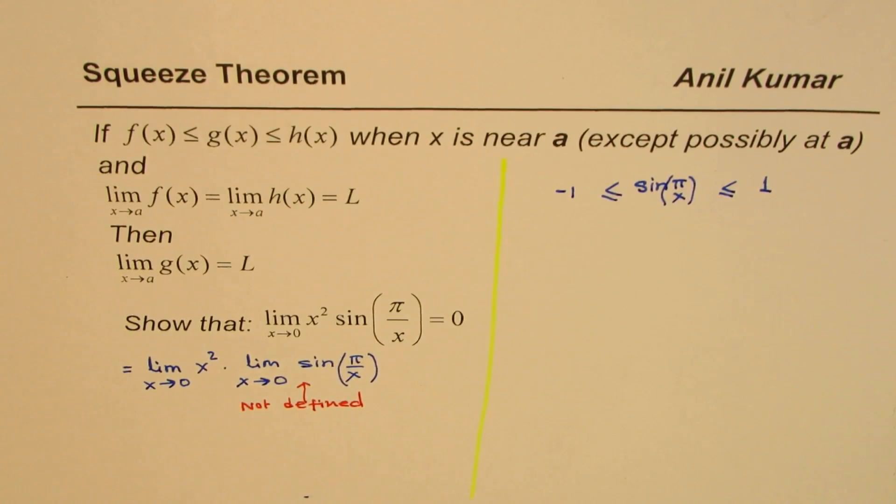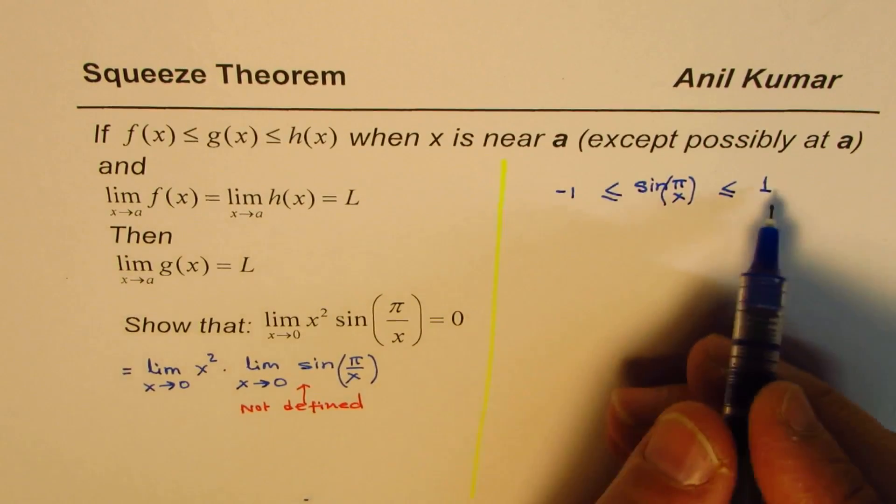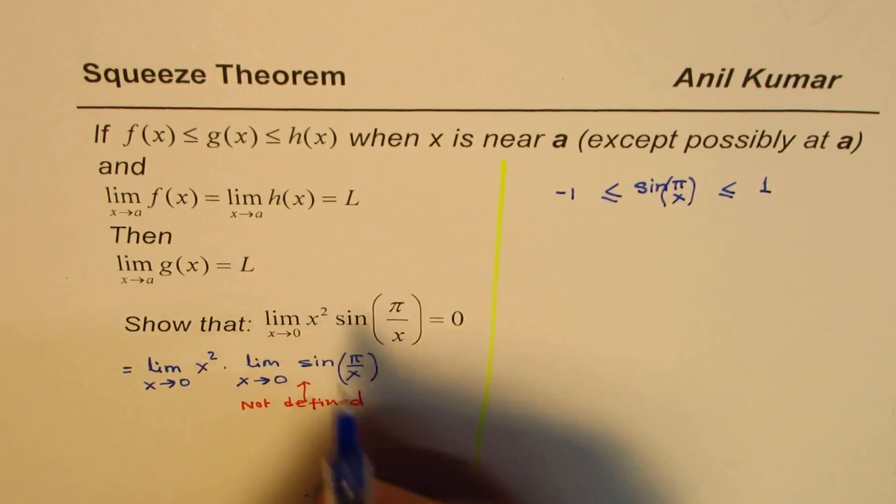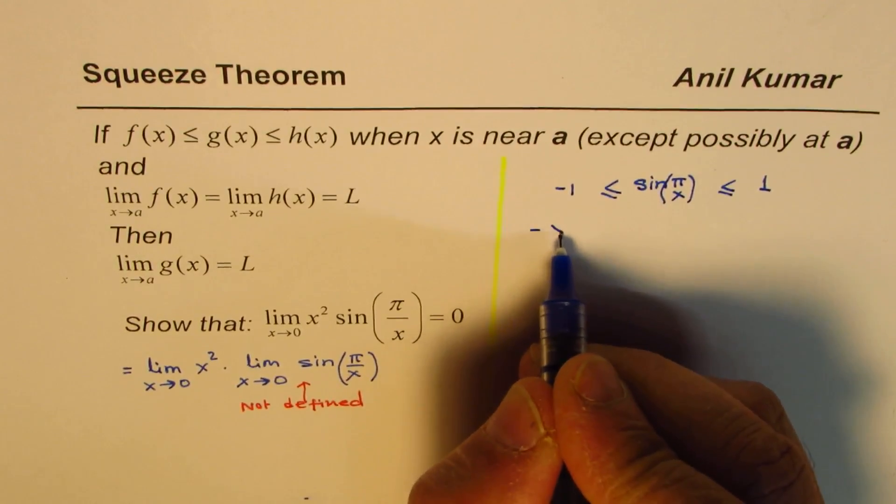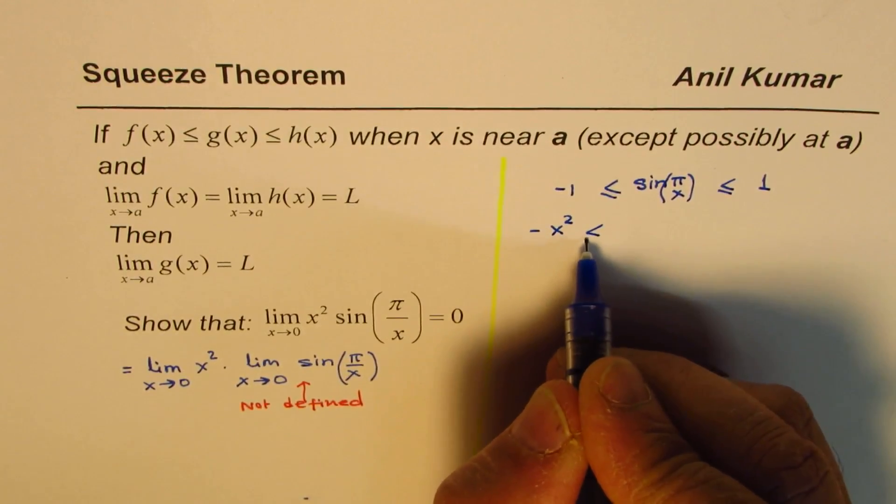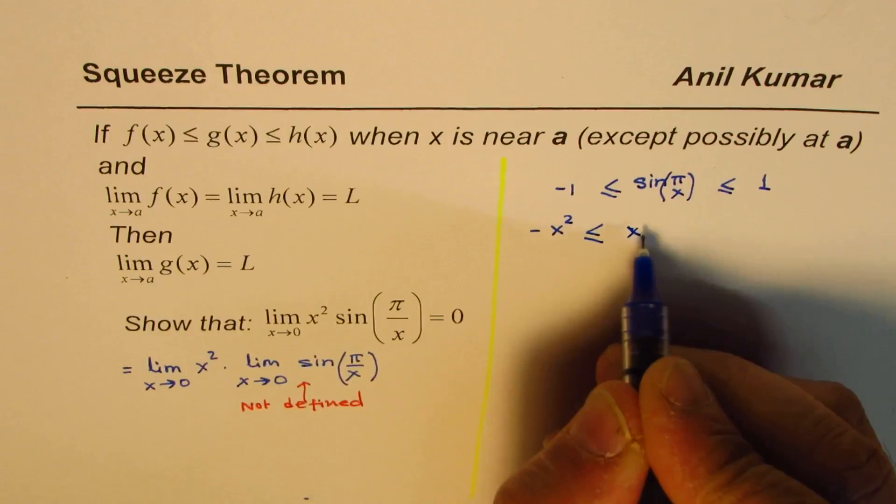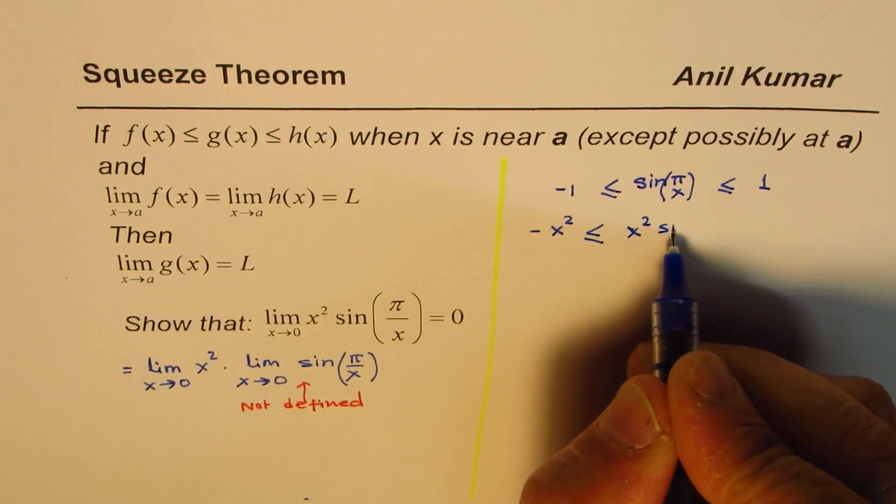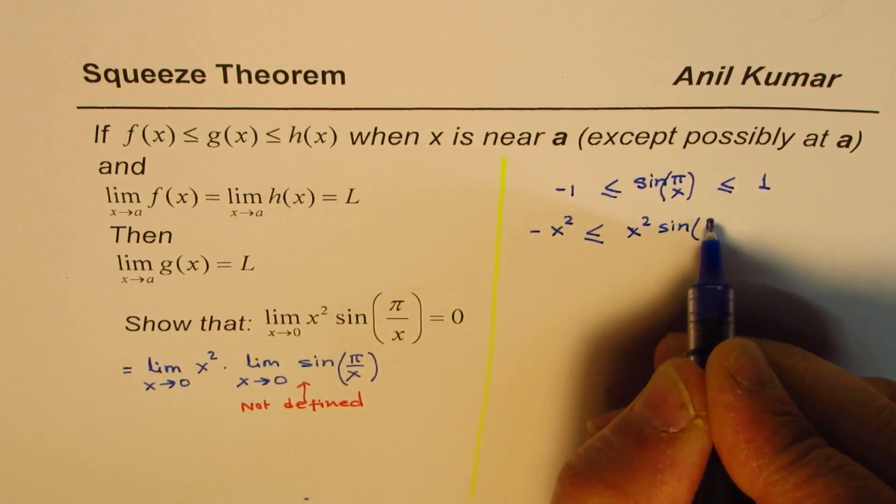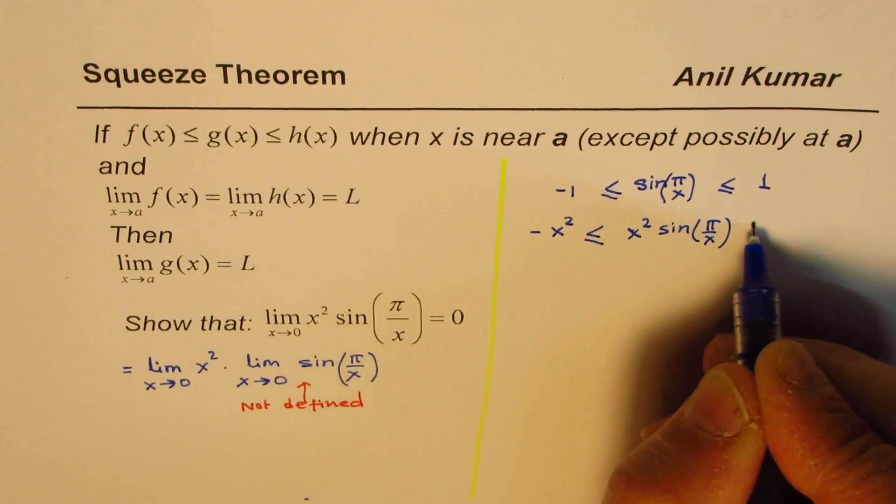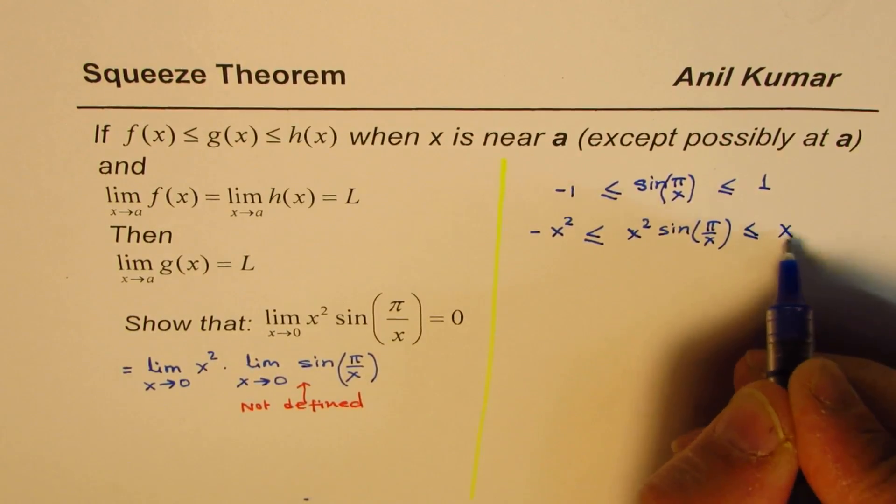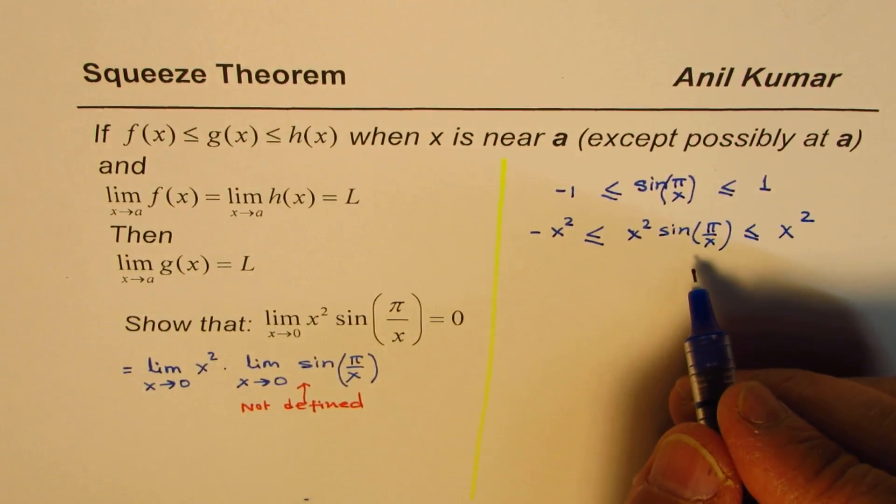Now, if that is the case, then if I multiply all these terms by x², which is positive always, what do I get? I get -x² ≤ x² sin(π/x) ≤ x². So this is what I get.